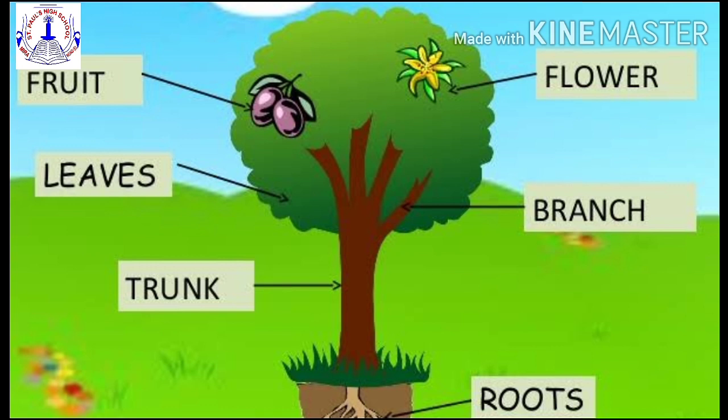Which of these parts are seen on a tree most of the time? Yes, the leaves, branches, trunk and roots are seen for most of the time. Now, the leaves, branches and the trunk can be seen by us, but the roots are under the ground, so we cannot see them.